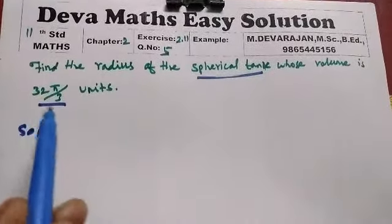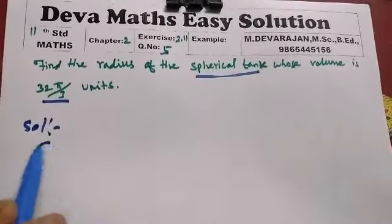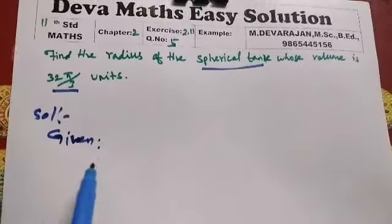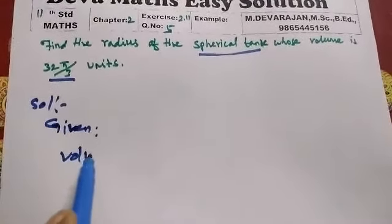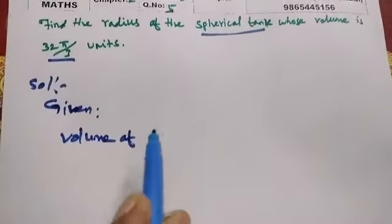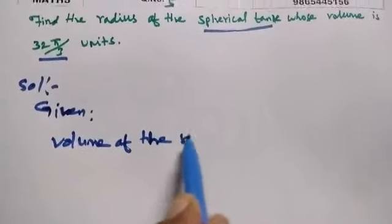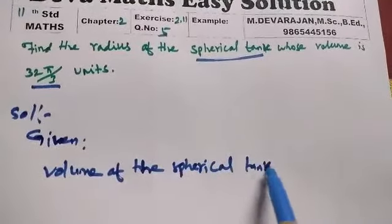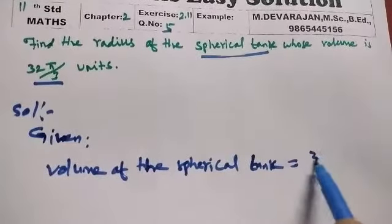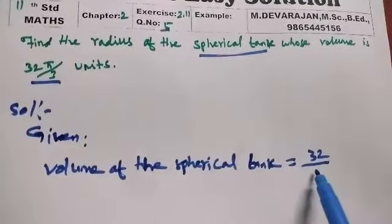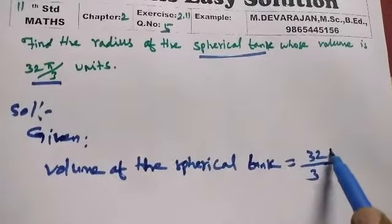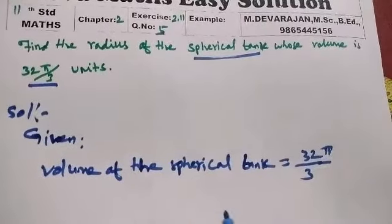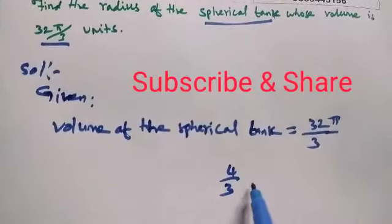Given: we need to find the radius of the spherical tank. The volume of a sphere is 4/3πr³.